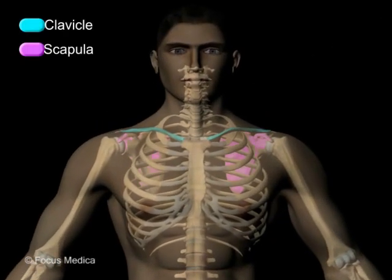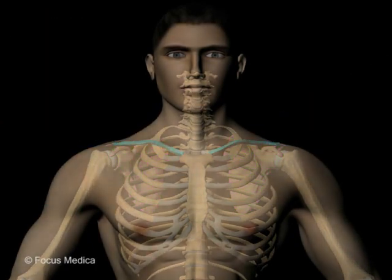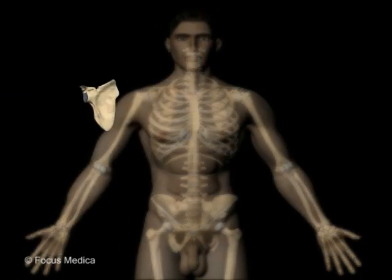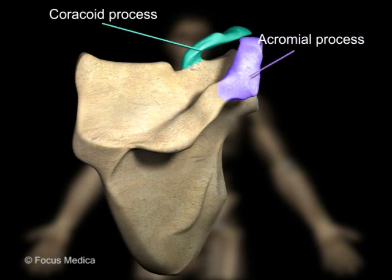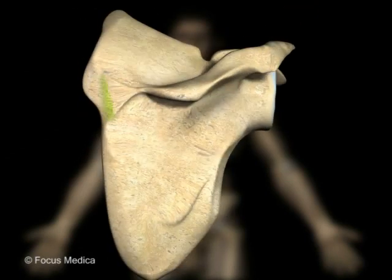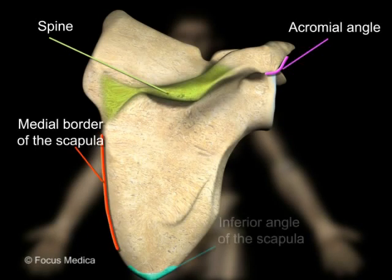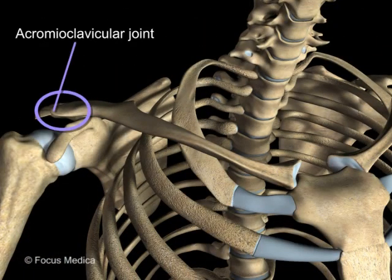The clavicle and the scapula are the bones of the shoulder girdle. The clavicle can be felt subcutaneously. Prominent landmarks on the scapula include the coracoid and acromial processes, the spine, acromial angle, medial border, and inferior angle of the scapula. The two bones meet at the acromioclavicular joint.